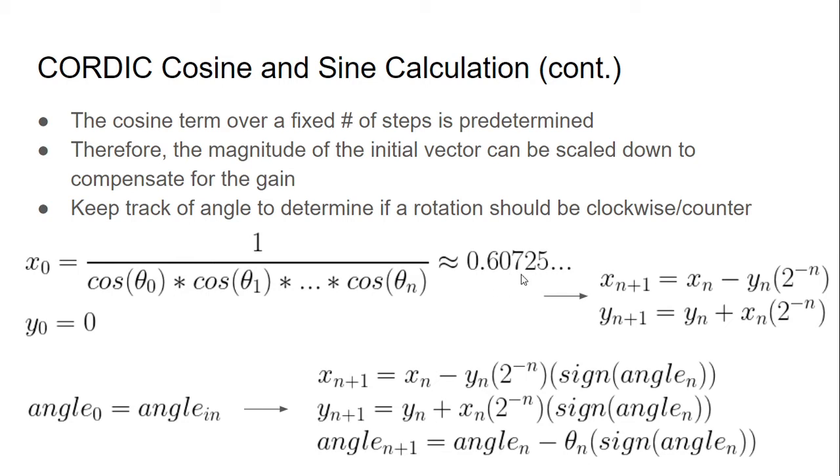So now what we have is as the number of stages approaches infinity, then x naught should approach 0.60725. And it's important to realize that depending on the number of iterations you have, this value will differ slightly. So with that, we've eliminated the cosine of theta term. So now we have no multiplies left and it looks like our job is done. However, there's one more piece of the puzzle that we have to consider.